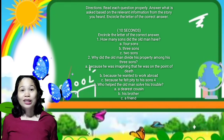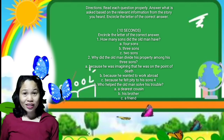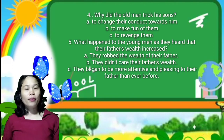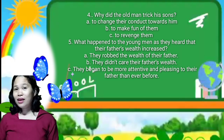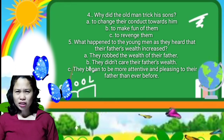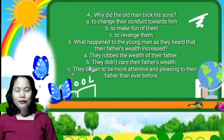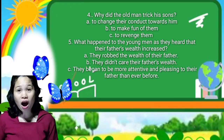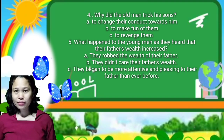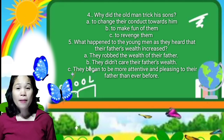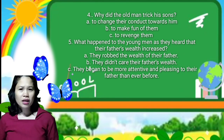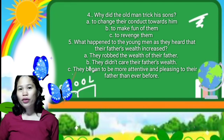Number three: who helped the old man solve his trouble? A — the dearest cousin; B — his brother; C — a friend. Number four: why did the old man trick his sons? A — to change their conduct towards him; B — to make fun of them; C — to get revenge on them. Number five: what happened to the young men as they heard that their father's wealth increased? A — they robbed the wealth of their father; B — they didn't care about their father's wealth; C — they began to be more attentive and pleasant to their father than ever before.